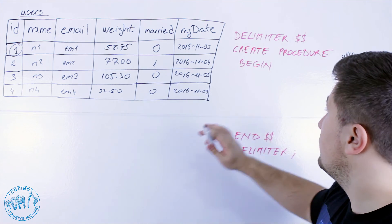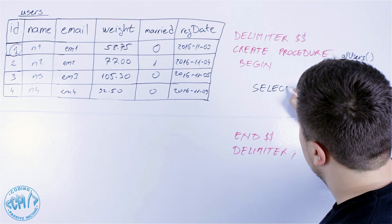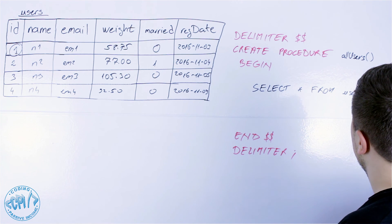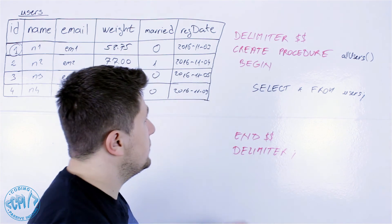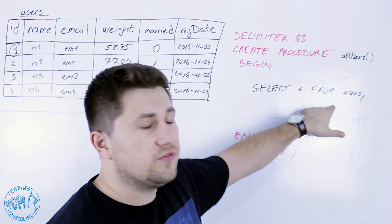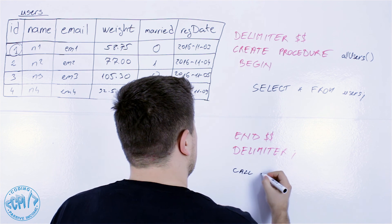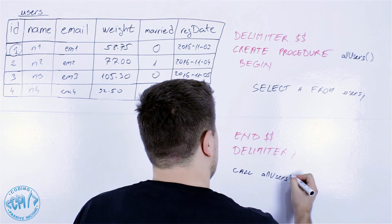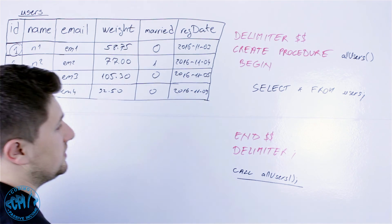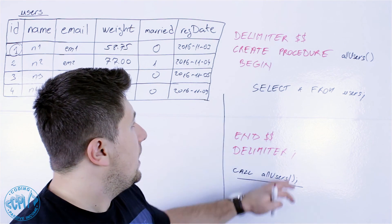Between BEGIN and END we write the commands we want to use inside this procedure. So we write: SELECT * FROM users. That's it — we have created the procedure all_users. When we call it, this command will execute and select everything from users. We call this procedure by writing: CALL all_users; and when it executes we will have our data returned. This is a very basic procedure — I just wanted to show you the basics of how to create one.